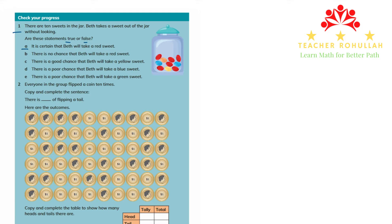Statement A says it is certain that Bet will take a red sweet. We use 'certain' when all the possible outcomes are that outcome. But here we don't have all possible outcomes as red sweets, so this is false — all the sweets are not red. We cannot say it is certain. We use 'certain' when we are 100% sure of something happening.